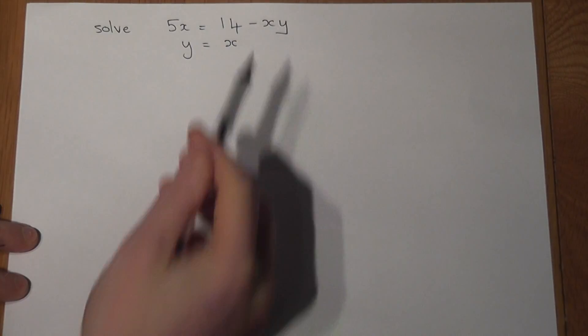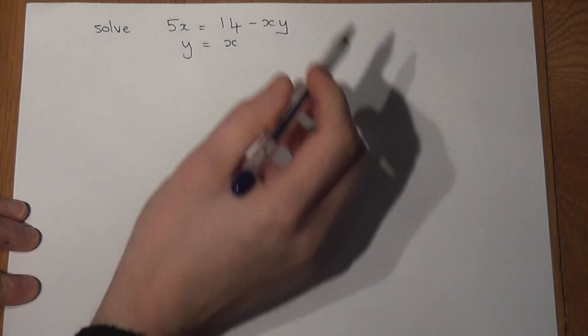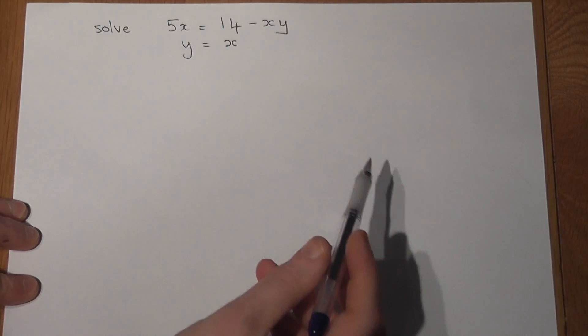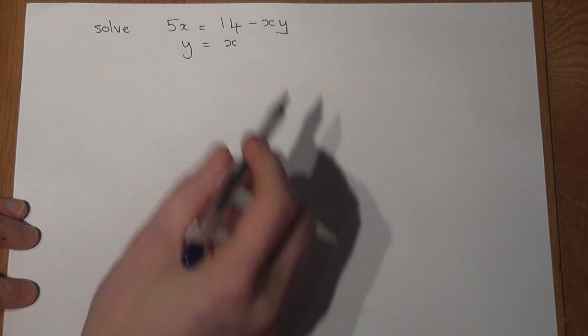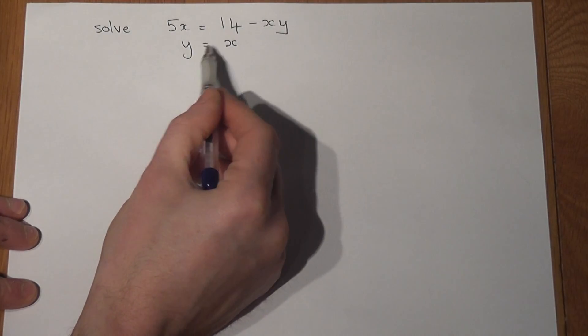Now the issue with the first equation is we have two variables x and y. So x here and x here and a y there. However we know that y is equal to x.